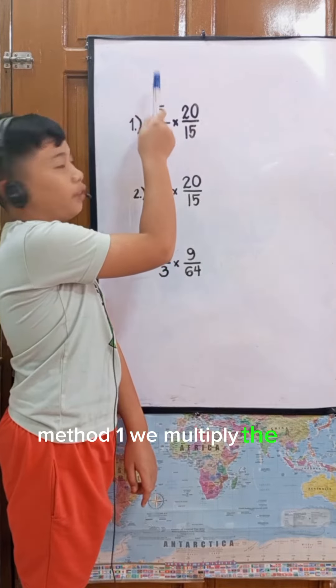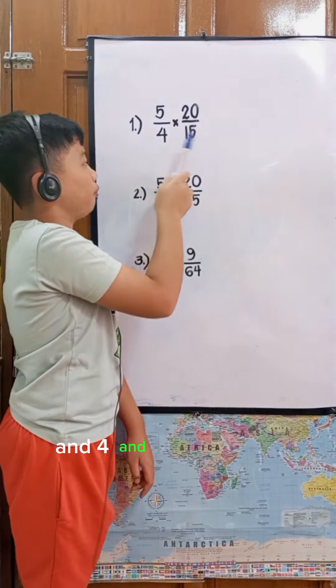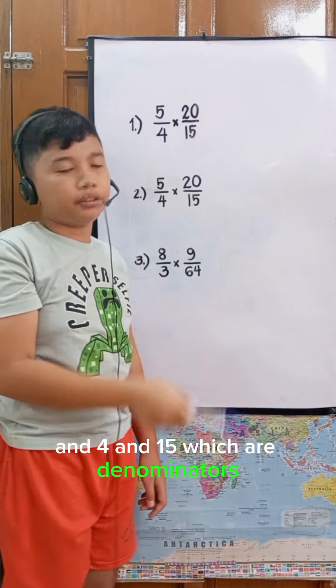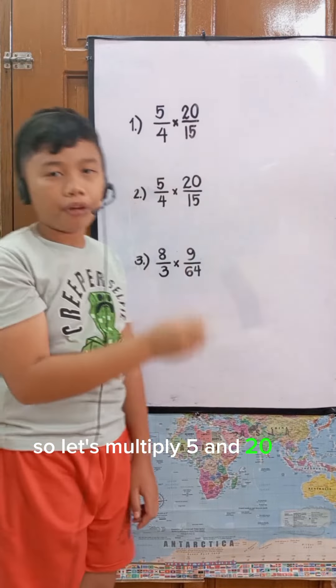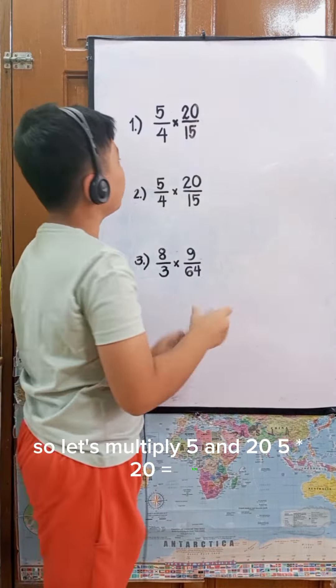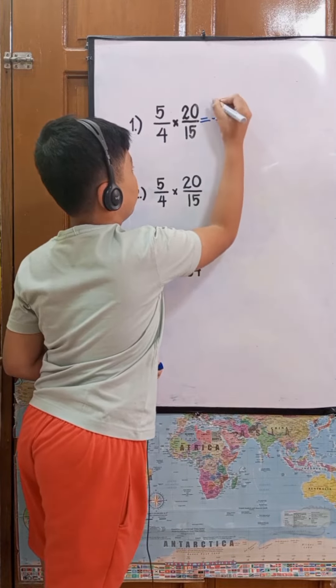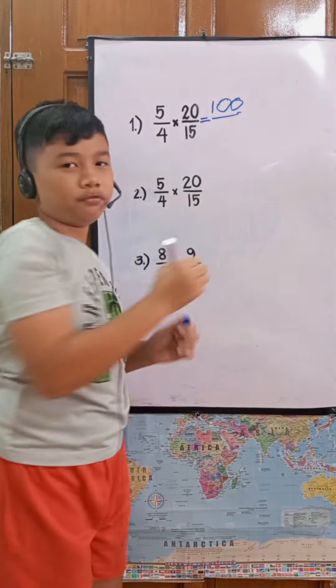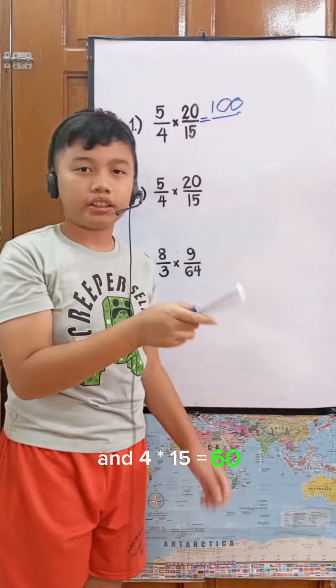We multiply the 5 and 20, which are numerators, and 4 and 15, which are denominators. So let's multiply: 5 times 20 equals 100, and 4 times 15 equals 60.